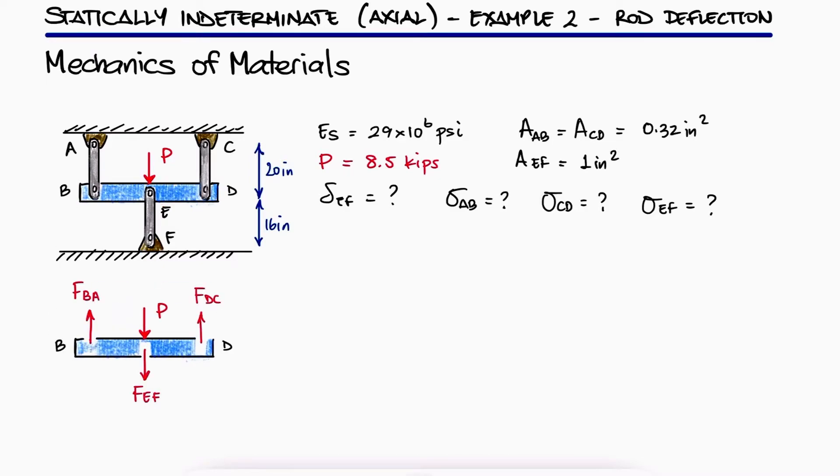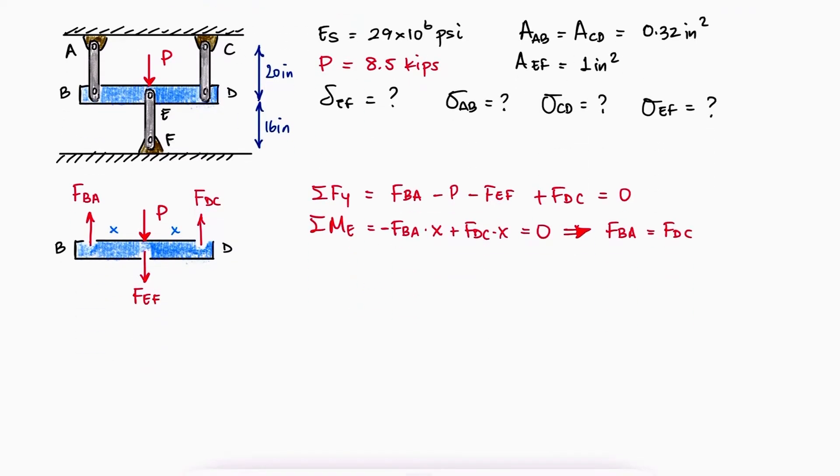With a free body diagram of BED and its corresponding equilibrium equations, and always assuming internal loads to be tensile, meaning that we assume all three rods are under tension, we find one equation with two unknowns.